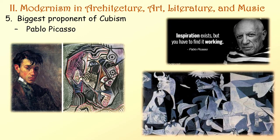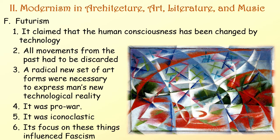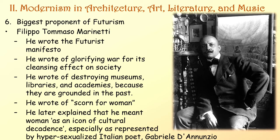Futurism claimed that human consciousness had been changed by technology, all movements from the past had to be discarded, and a radical new set of art forms were necessary to express man's new technological reality. Futurism was pro-war and iconoclastic, and its focus influenced fascism. Its biggest proponent was Filippo Tommaso Marinetti, who wrote the Futurist Manifesto—glorifying war for its cleansing effect, destroying museums and libraries because they were grounded in the past, and expressing scorn for woman as an icon of cultural decadence.